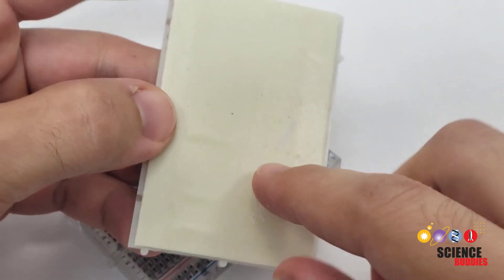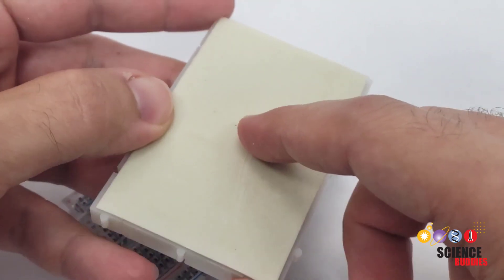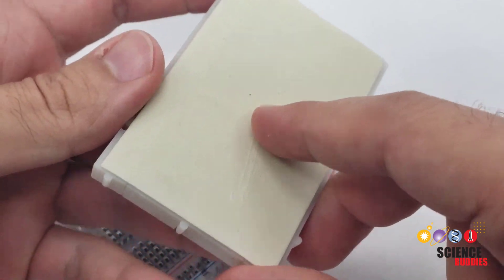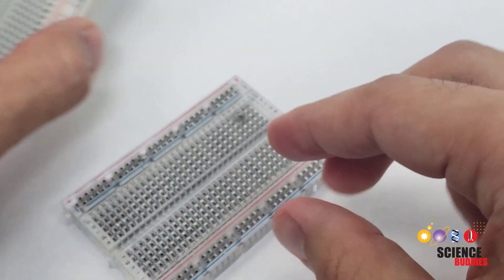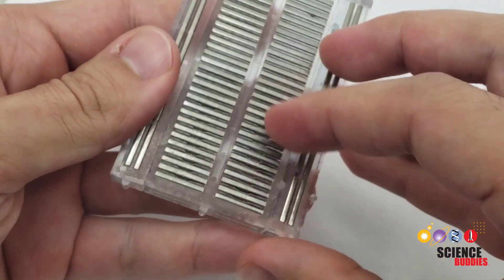If you flip your breadboard over, you will see that normally they have an adhesive backing and you would leave this on. However, in this video, I am going to remove the backing from this breadboard so I can show you how it works.